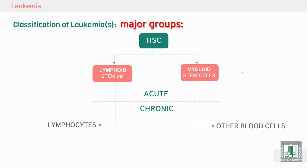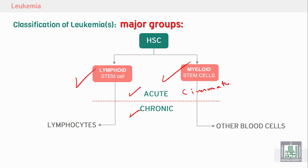We can classify leukemia into two major groups: lymphoid and myeloid. We can also classify leukemia into two types: acute or chronic. Acute leukemia involves more immature cells, while chronic leukemia involves more mature cells.